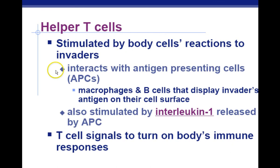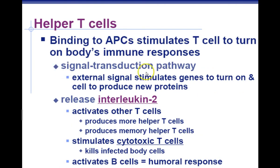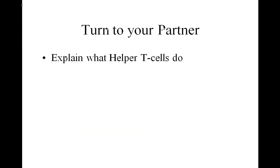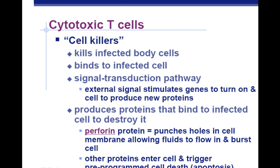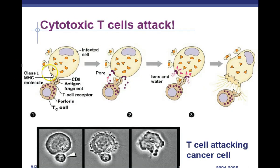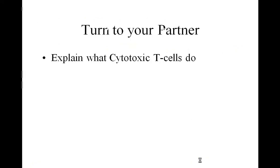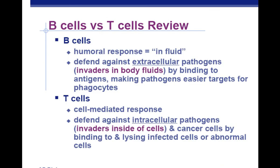To summarize T cell activity: invader stimulation makes the macrophage into an APC, which presents the antigen and releases interleukins, activating helper T cells. Helper T cells release interleukin-2 to activate both T cells and B cells. Cytotoxic T cells — the cell killers — bind to infected cells and produce proteins called perforin (think perforations in paper), which punch holes in the enemy cell causing apoptosis. Cytotoxic T cells can also destroy cancer cells — B cells cannot do this.